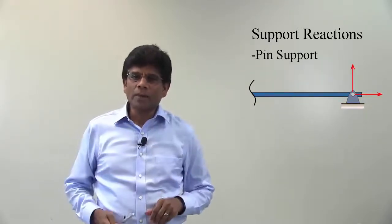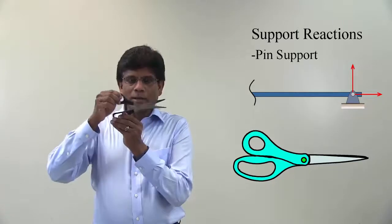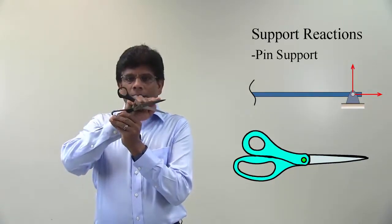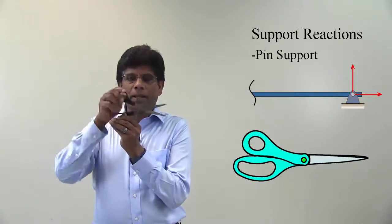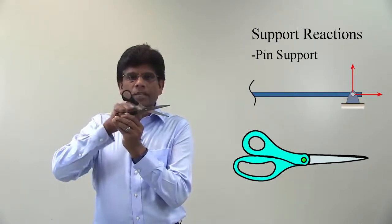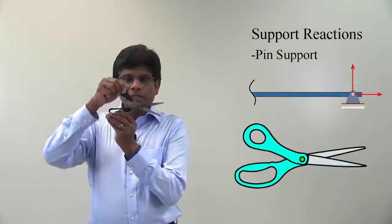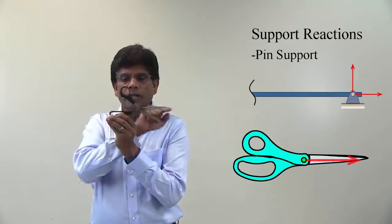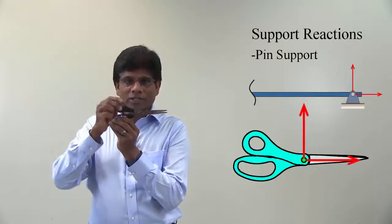Let us take a look at another example of a pin support. Here I have a scissor, and it has got two parts: upper handle with a blade and the lower handle. These two parts are connected by a pin right here. This pin allows the part to rotate. Notice this: this pin does not allow the parts to move horizontally or vertically with respect to each other. It only allows rotation.